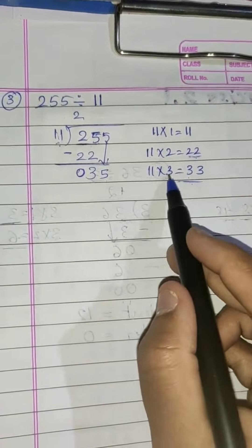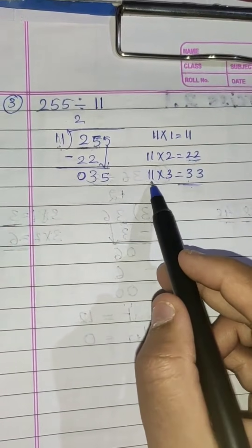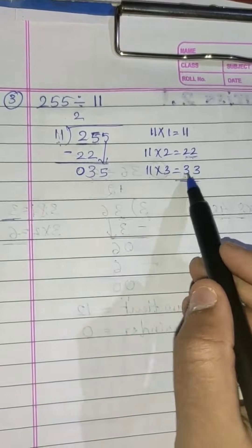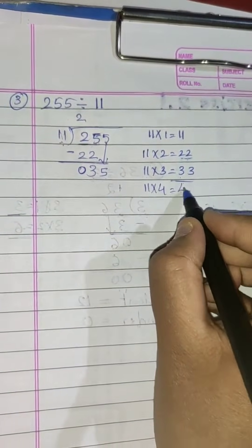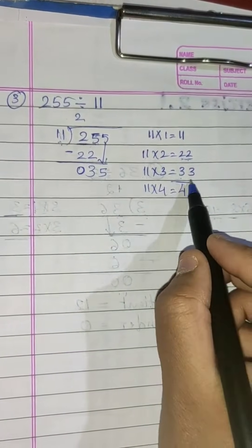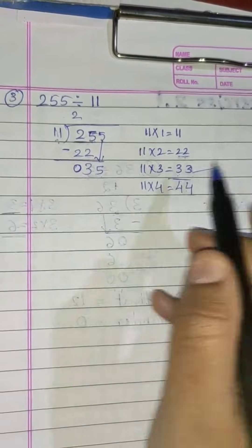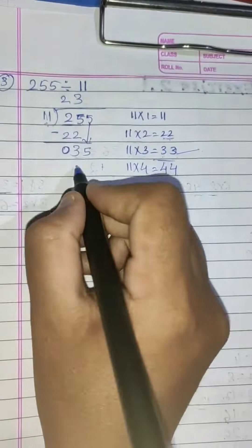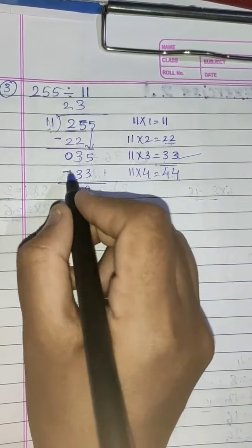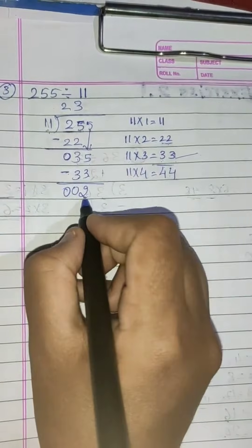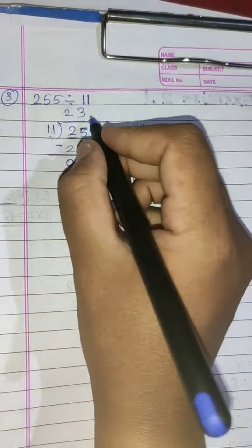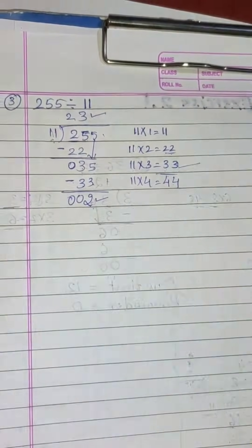Does 35 appear in the 11 times table? No. So 11×3=33 and 11×4=44; since 44 is bigger than 35, take the lesser number — 11×3=33. Subtract: 5 minus 3 is 2, 3 minus 3 is 0. There are no more digits to bring down. So the quotient is 23 and the remainder is 2.